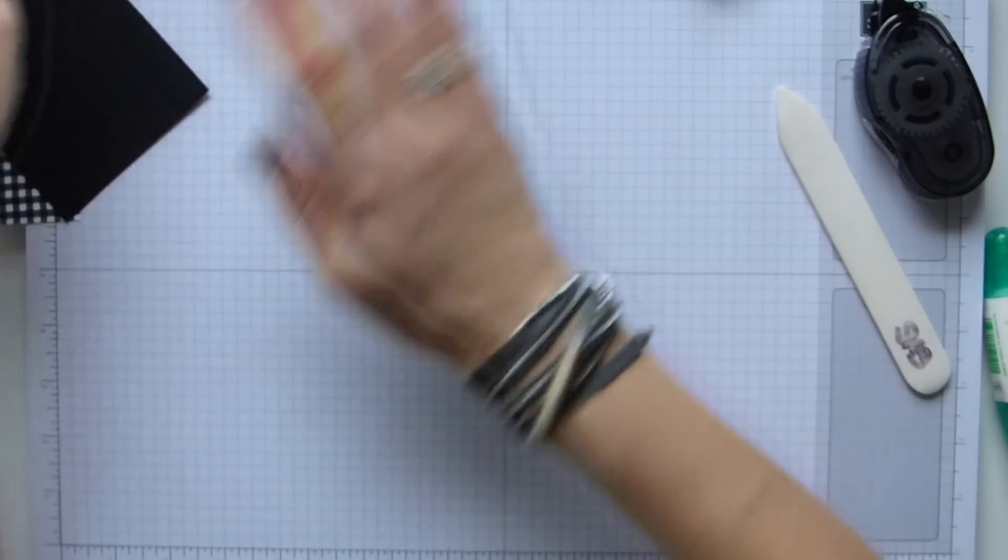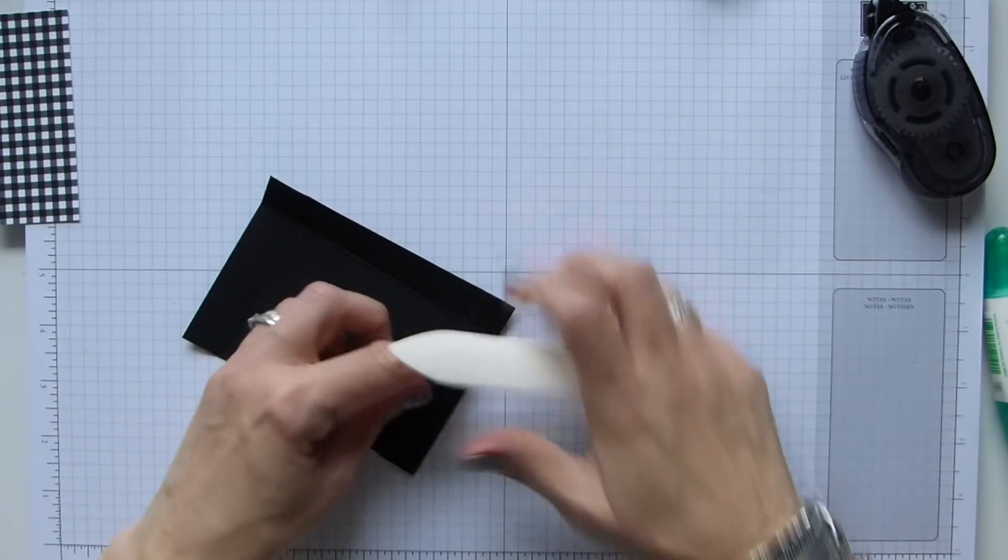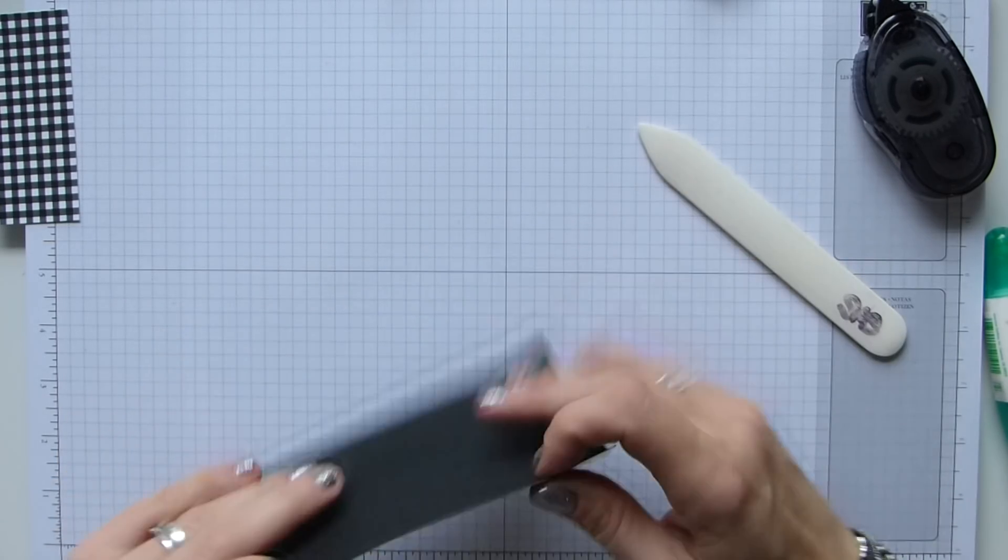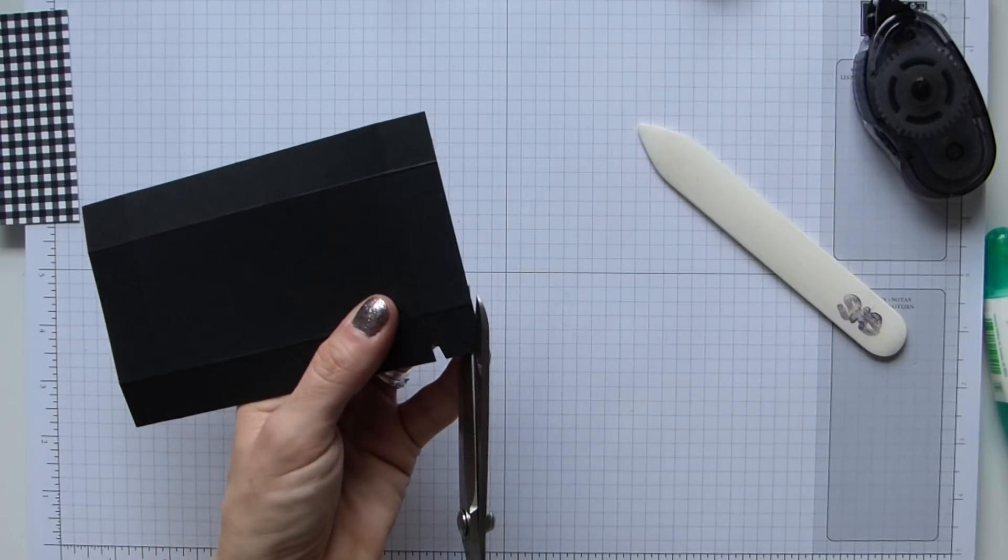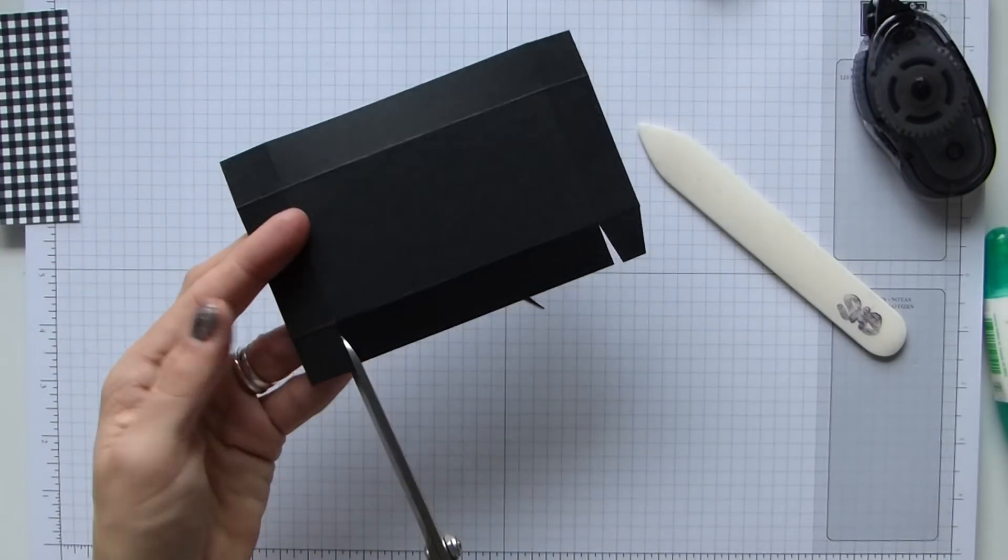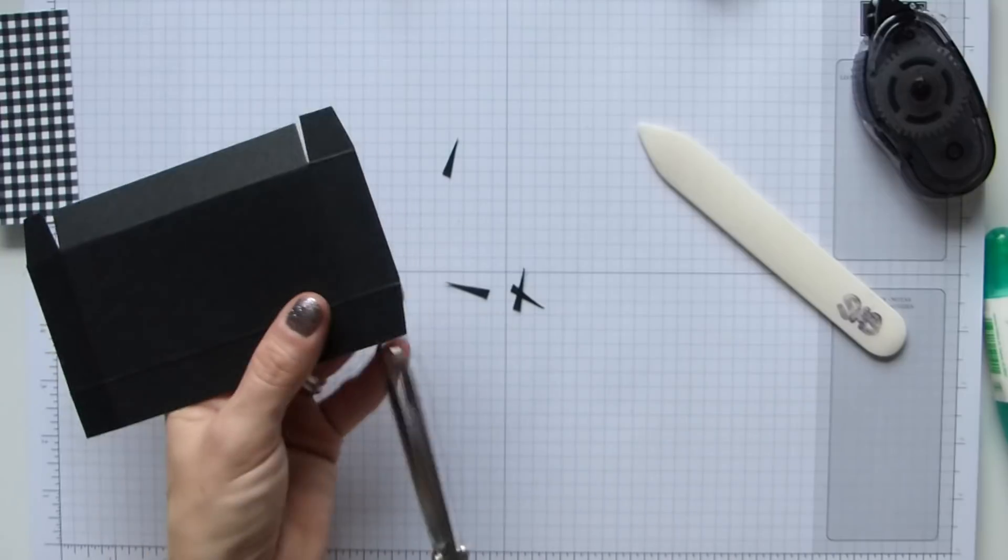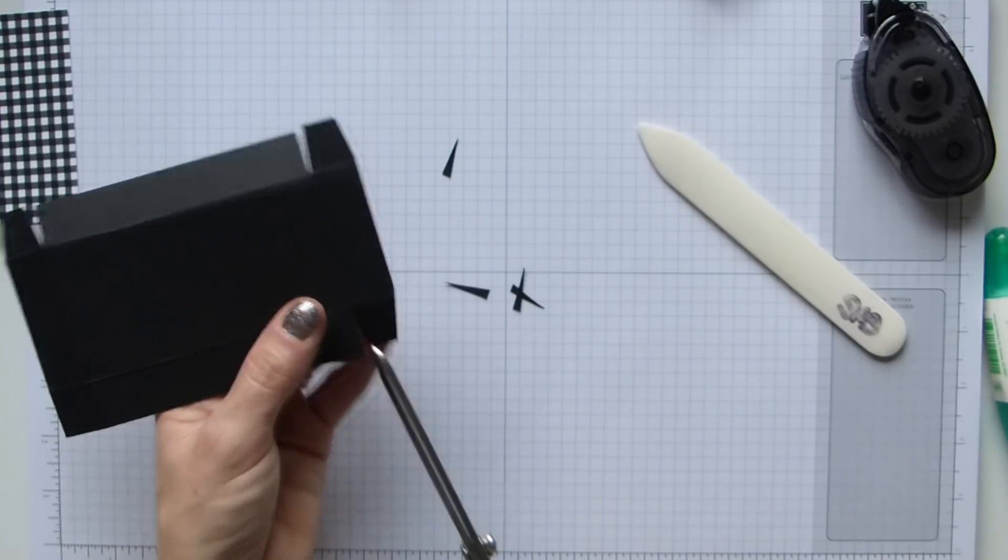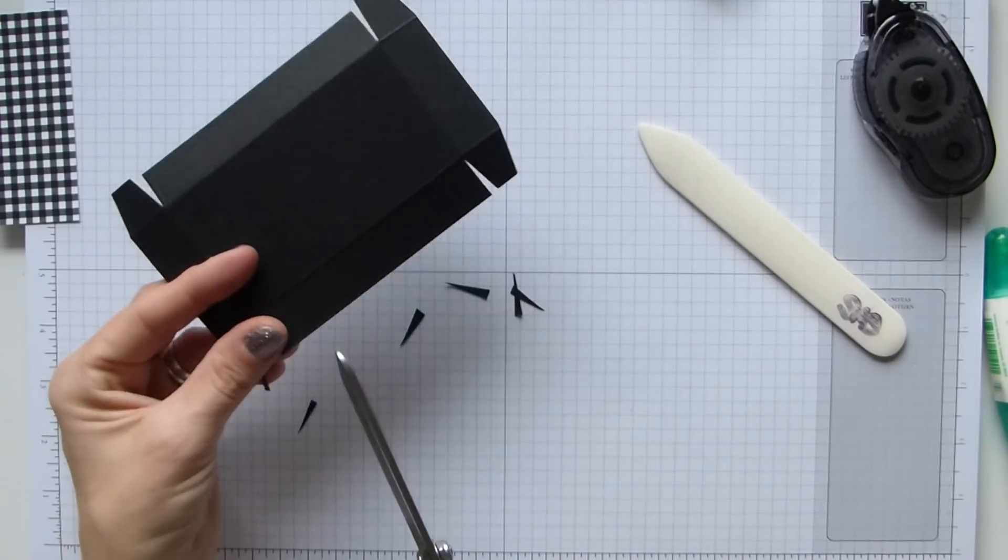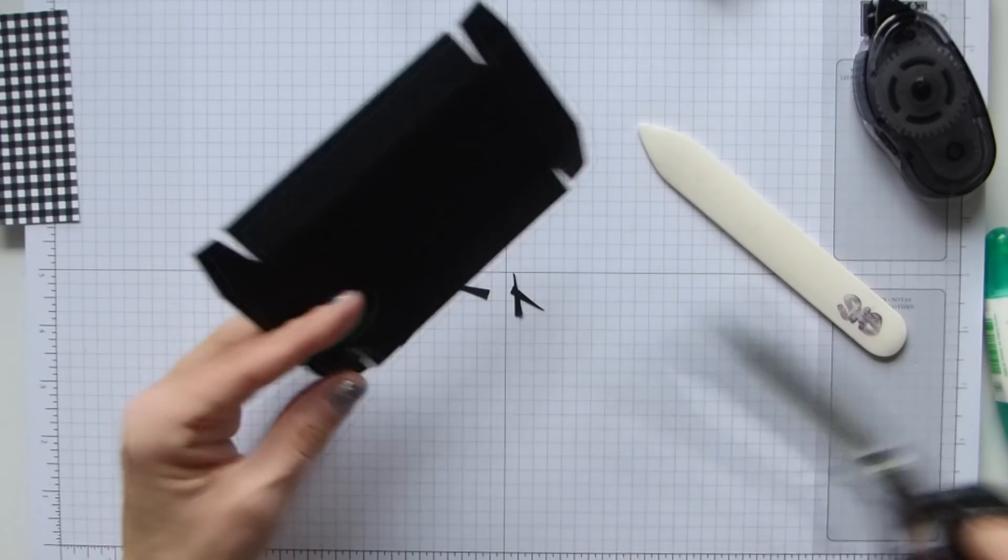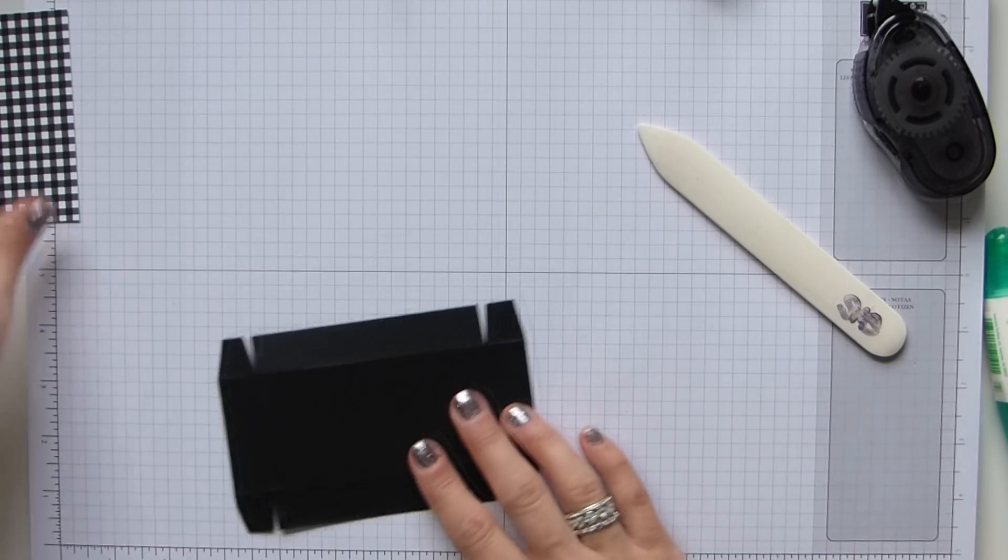So set that off to one side while we do our lid. So we're going to fold and burnish the same as we did for the base. Fold and burnish all of those score lines exactly the same with the lid. We're going to cut those wedges. And then we have some DSP to pop on the top. And then the DSP is three and three quarters by one and three quarters, which will be 11 by four centimeters.